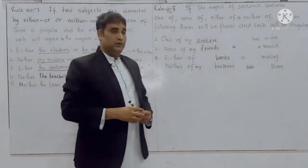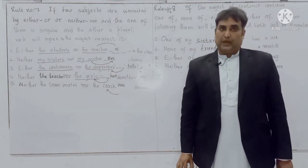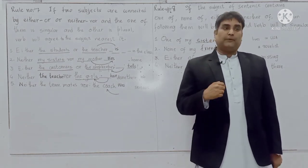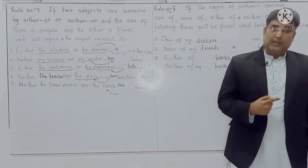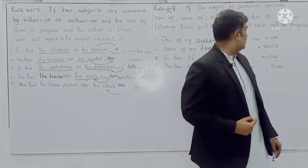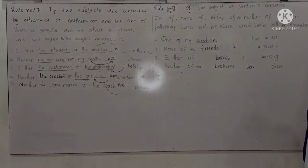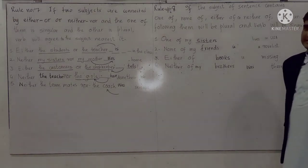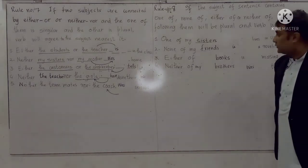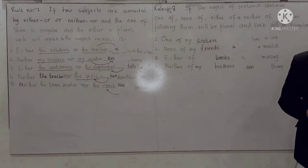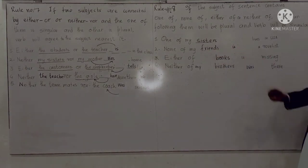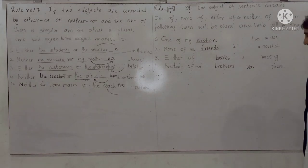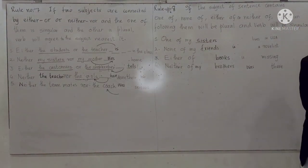To summarize rule number eight: if the subject of a sentence consists of or contains 'one of,' 'either of,' 'neither of,' or 'none of,' the noun phrase after them will be plural and the verb following them will be singular. For example: 'One of my sisters lives in USA' — not 'one of my sister lives.' 'None of my friends is a novelist.' 'Either of books is missing' — not 'either of book.' 'Neither of my brothers was there.'